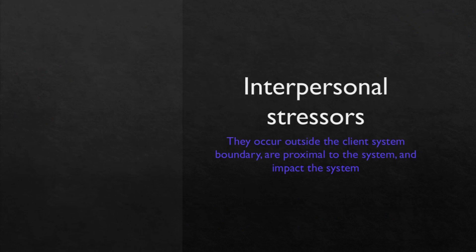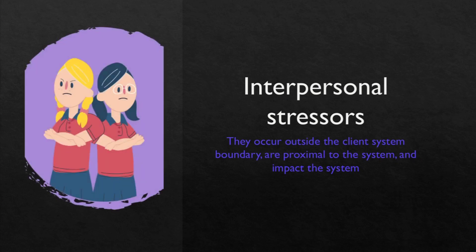Next is interpersonal stressors. They occur outside the client's system boundary, are proximal to the system and impact the system. It will be something outside us, but proximal — meaning nearer — to our system. For example, there is a fight between me and my friend. This is happening outside my system but is closely related to me, so it's obviously having an impact on me.